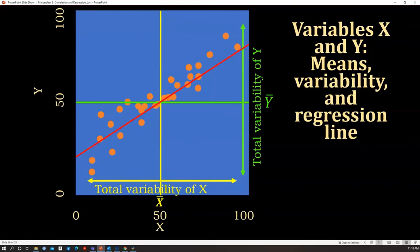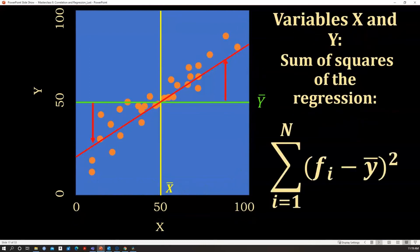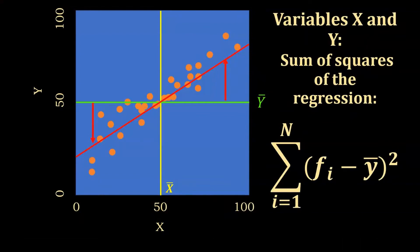We are going to explain later how we calculate that line. But this line allows us to calculate a different type of variability. We can obtain a measure of the separation between the line and the mean of Y.